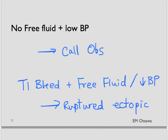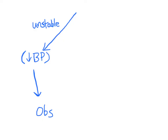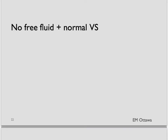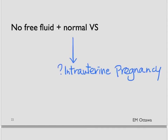Just to recap: if there is a patient in her first trimester that you are worried about as an ectopic, either the presence of free fluid on ultrasound or an unstable patient should prompt a phone call to the consultant. In other words: unstable patient — contact consultant. Stable patient with free fluid on the bedside ultrasound — also contact consultant. What about the stable patient who has no free fluid on the bedside ultrasound? Our question now becomes: is there an intrauterine pregnancy on the ultrasound? This can be done at the bedside by qualified physicians or in the radiology department, and there can be two outcomes — either an intrauterine pregnancy is seen, or no intrauterine pregnancy is seen.